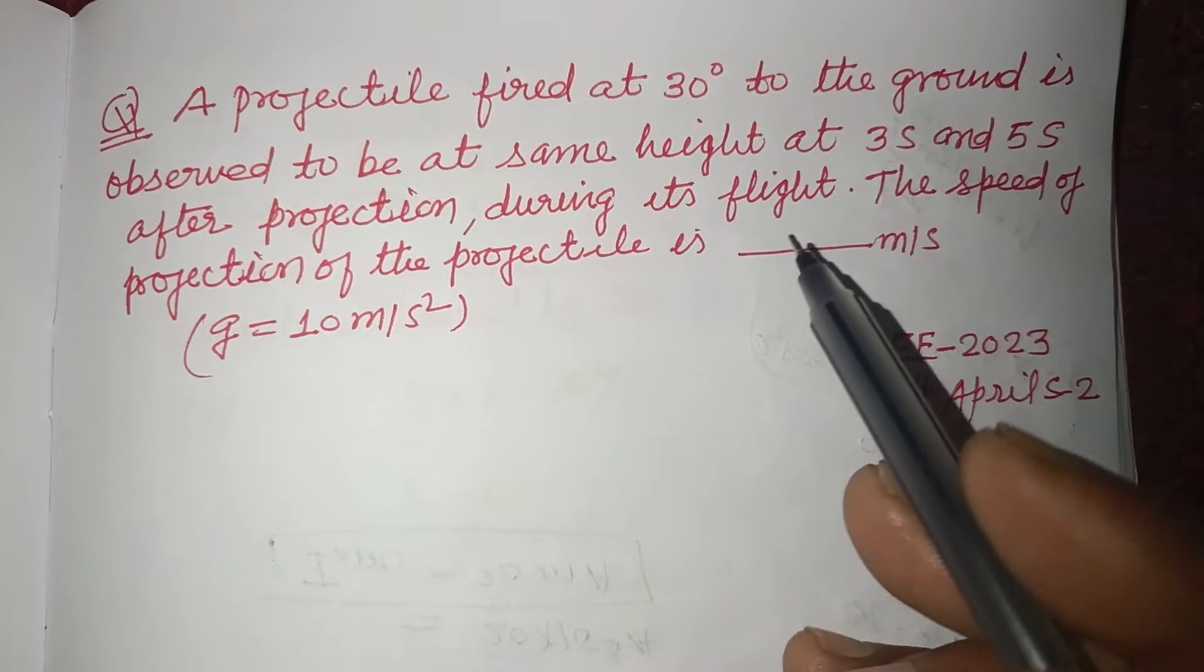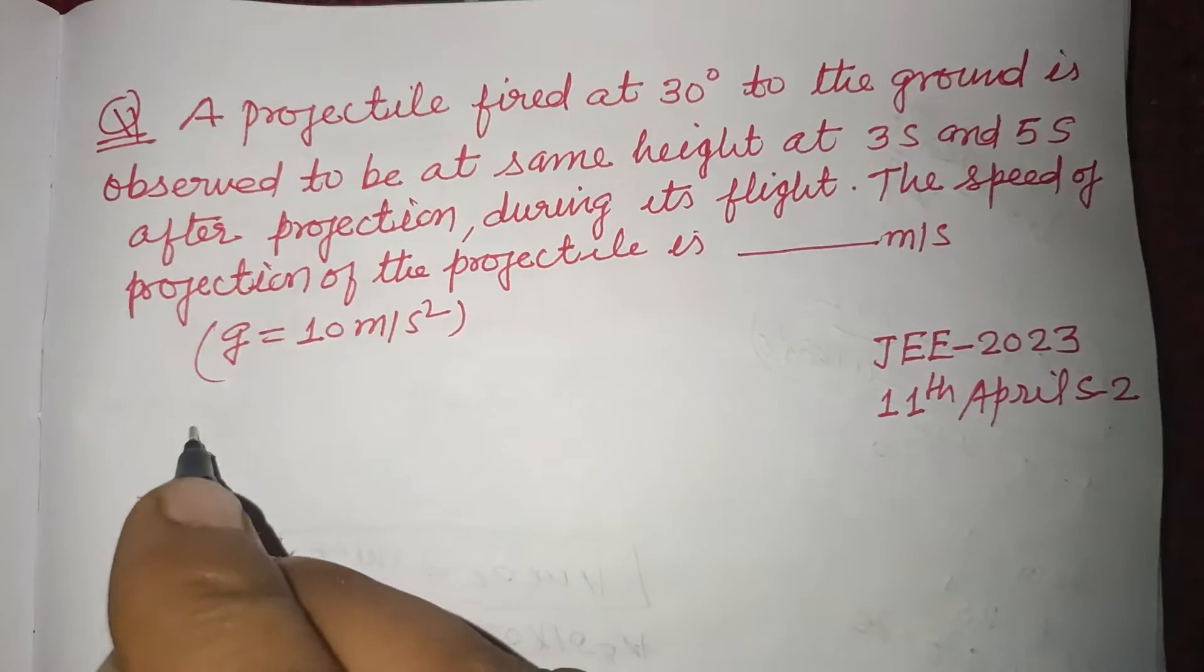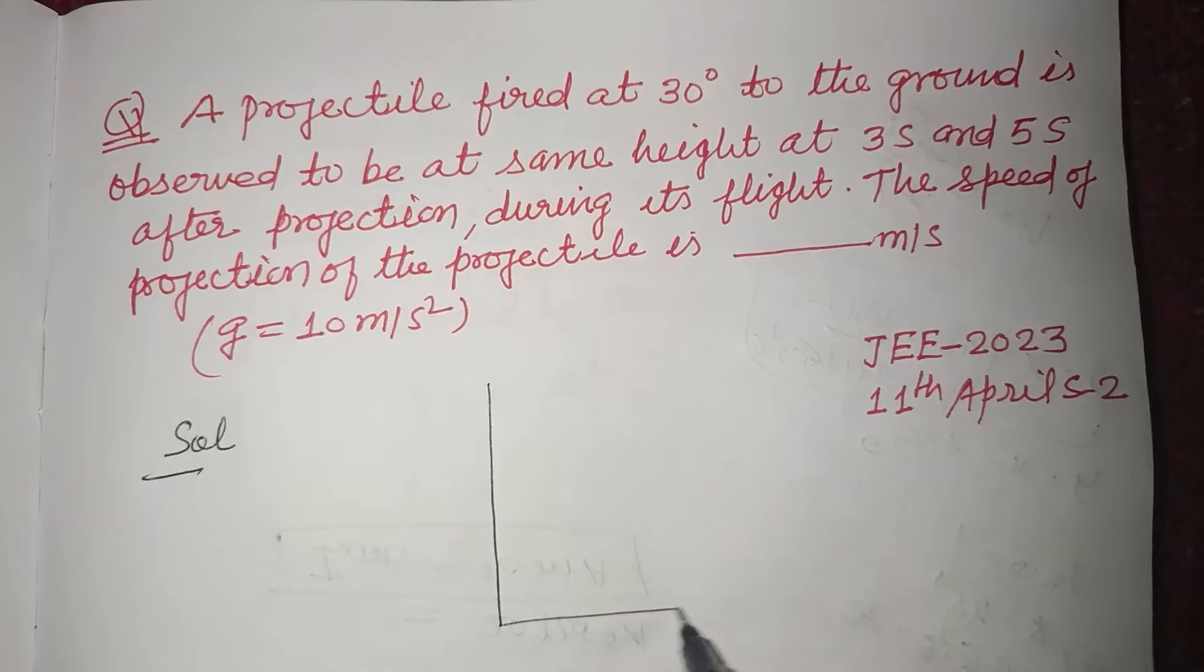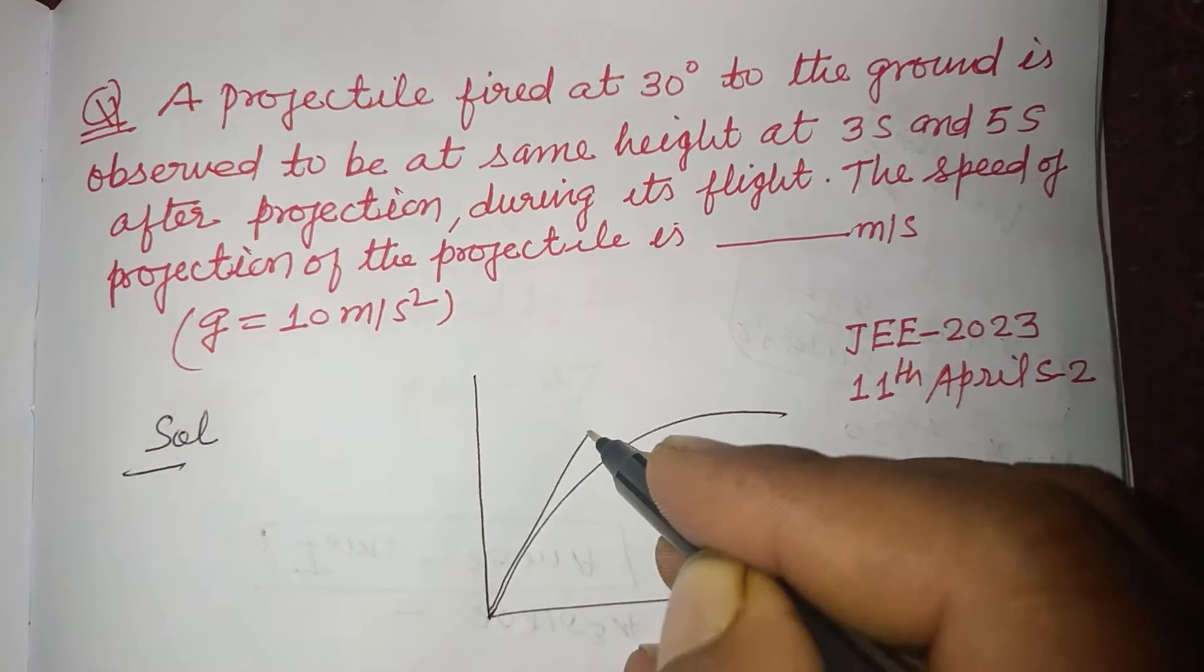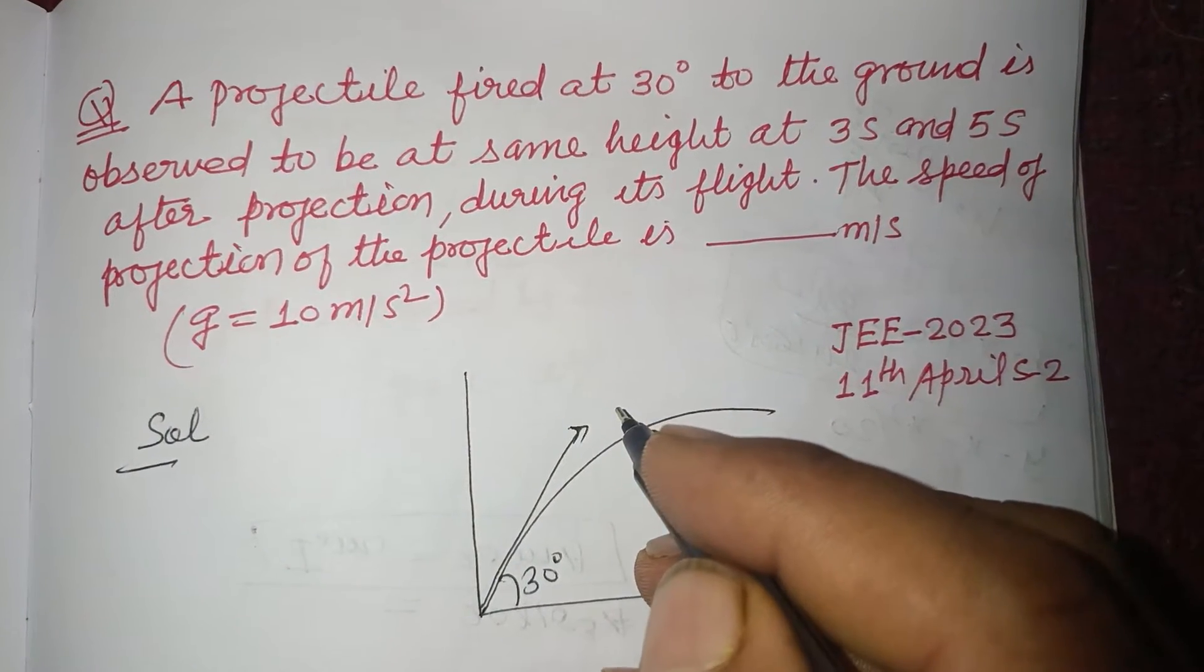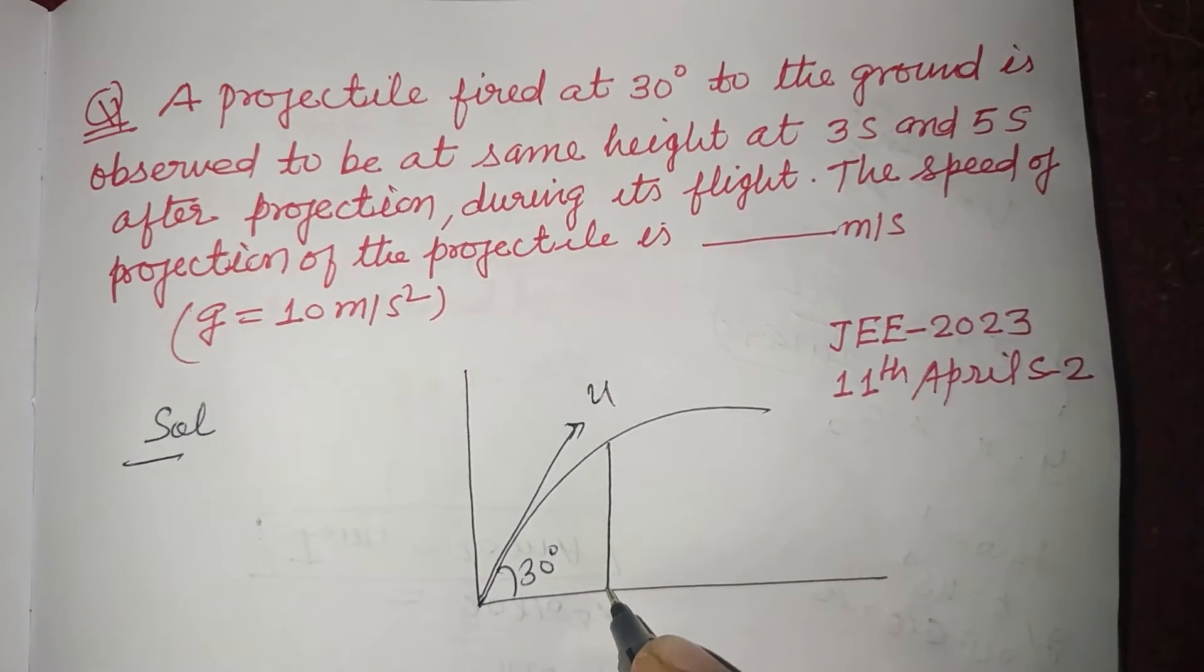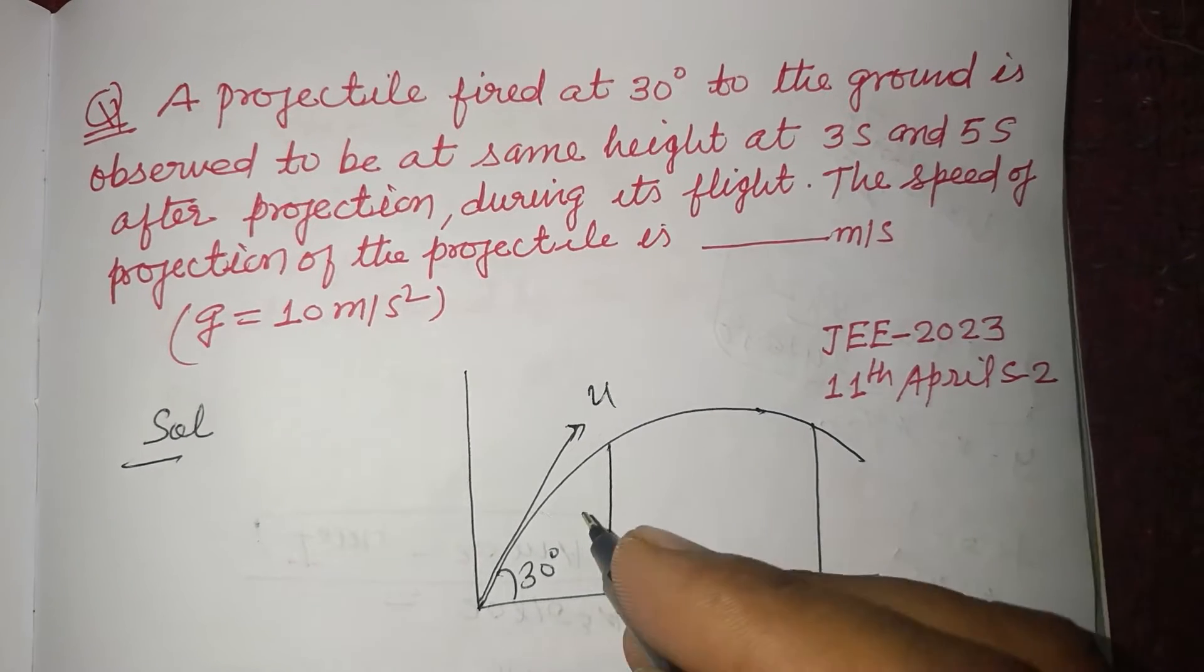So students, the question is saying that a projectile when projected at an angle of 30 degrees with velocity u reaches the same height at two instants - first at t1 and then at t2.